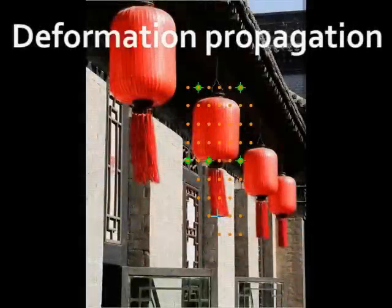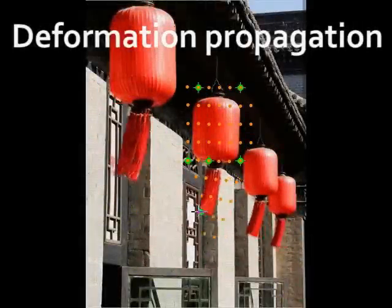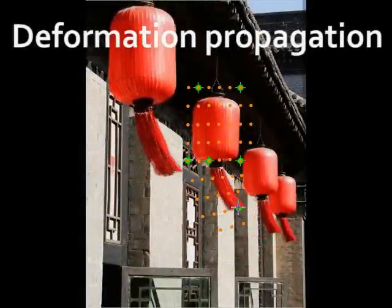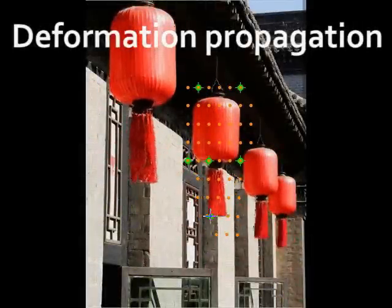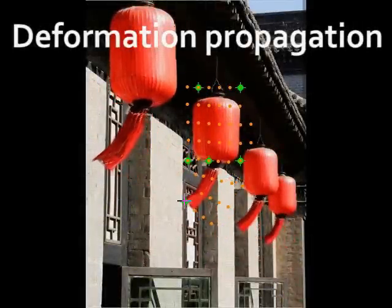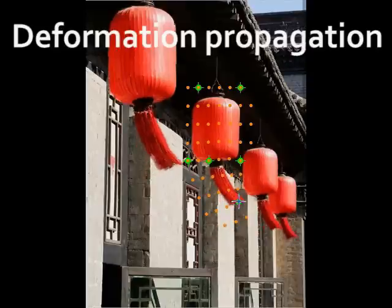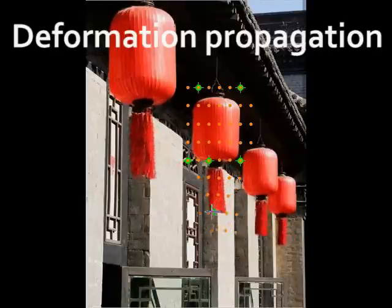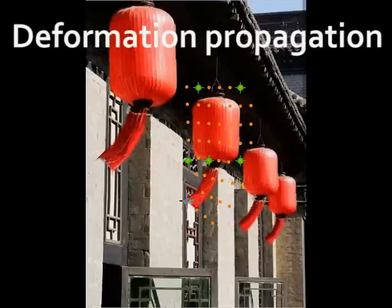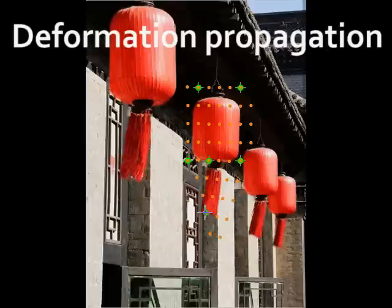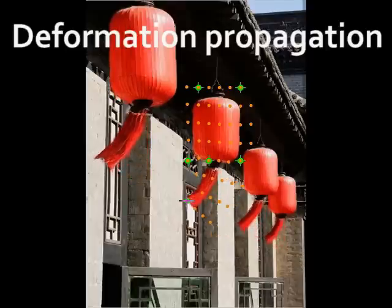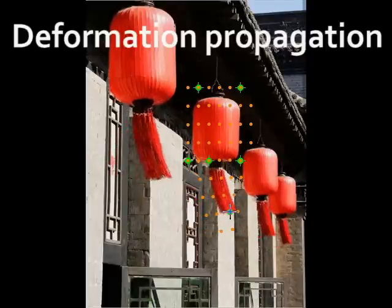Deforming repeated elements in an image while maintaining consistency is laborious if done manually. The dense correspondences found by our method enable simultaneous deformation of a group of repeated image elements. Here we show such deformation propagation for a group of lanterns.